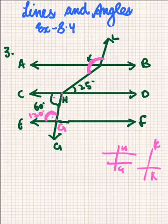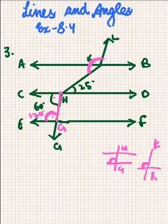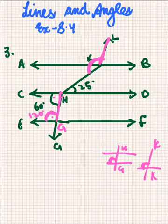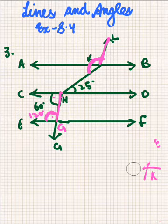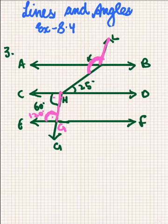Now if we see this angle and this angle, these are corresponding angles because line GH is parallel to line KL. So if this angle is 120 degrees, this angle will also be 120 degrees because these are corresponding angles. So we have the measure of this angle — it is 120 degrees.